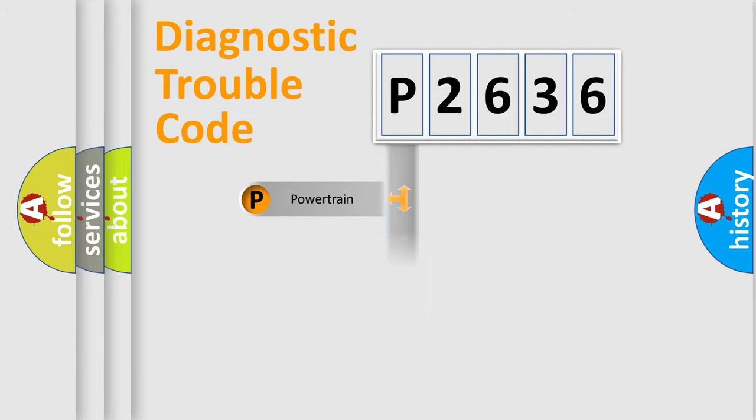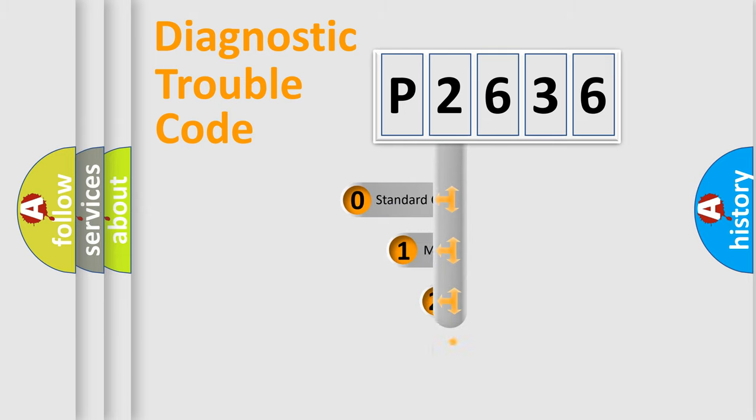We divide the electric system of automobile into the four basic units: Powertrain, Body, Chassis, Network. This distribution is defined in the first character code.